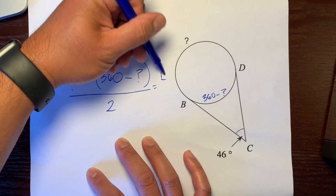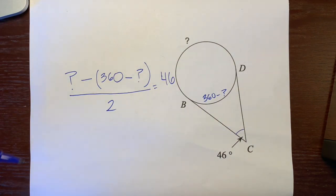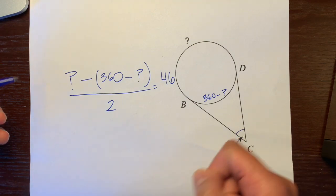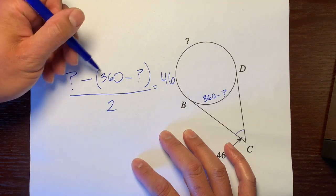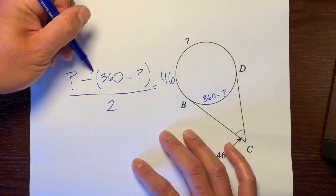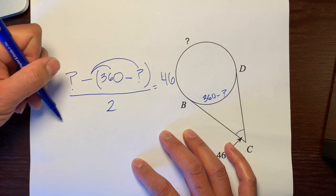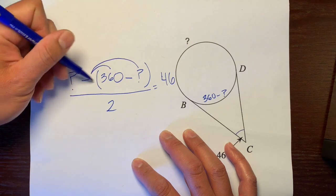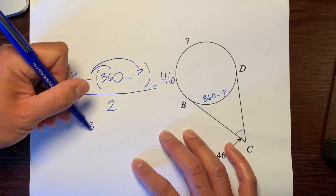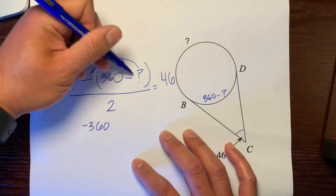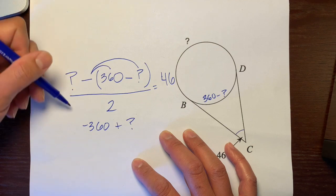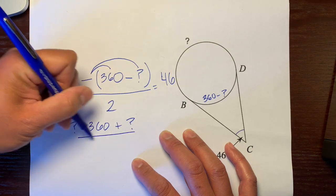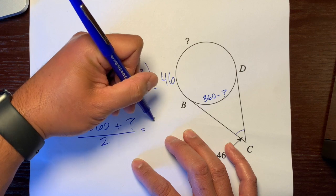Before we start solving, let's see if we can simplify this side. I'm going to take this negative and distribute it to everything inside the parentheses. This would be negative 360, and two negatives make a positive, so plus question mark.